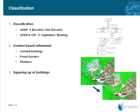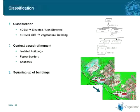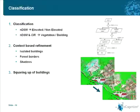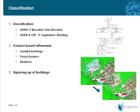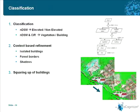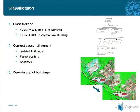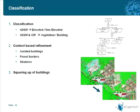In a next classification step, those objects were classified — first in a basic classification differentiating between elevated and non-elevated objects using a strict differentiation based on a normalized DSM, which was created from the DTM and DSM. Essentially everything higher than half a meter in elevation was identified as elevated versus non-elevated. Then a fuzzy logic function using the elevation in combination with color infrared was used to differentiate between vegetation and buildings.